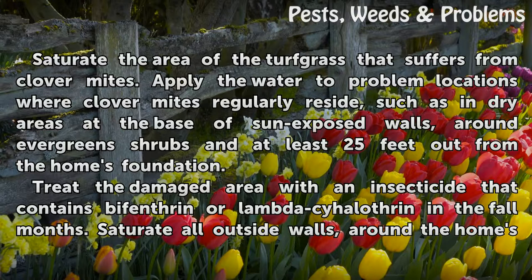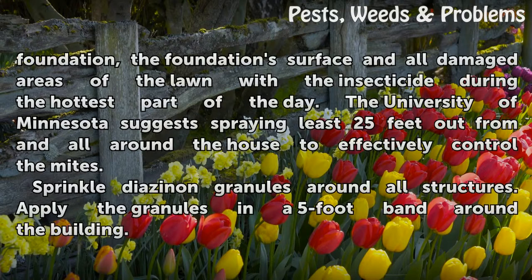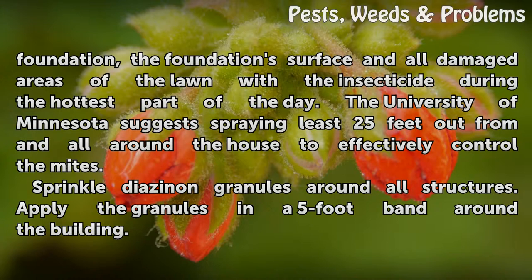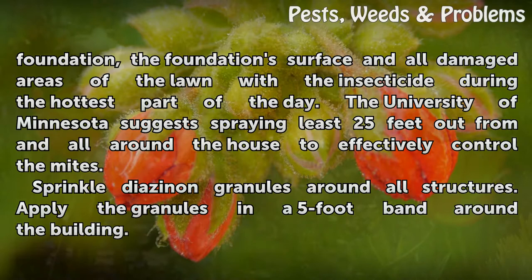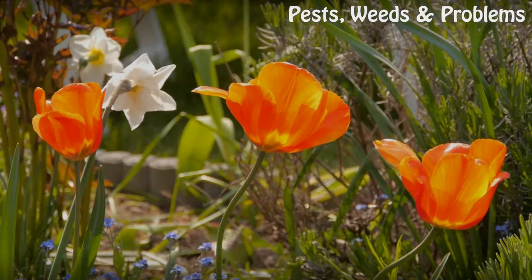Treat a damaged area with an insecticide that contains bifenthrin or lambda-cyhalothrin in the fall months. Saturate all outside walls, around the home's foundation, the foundation surface, and all damaged areas of the lawn with the insecticide during the hottest part of the day. The University of Minnesota suggests spraying leaves 25 feet out from and all around the house to effectively control the mites. Sprinkle Diazinon granules around all structures, applying the granules in a 5-foot band around the building.